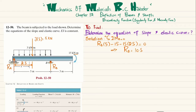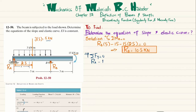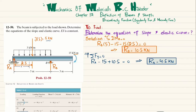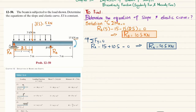Now with Rb known, we find Ra using sum of forces in the y-direction equals zero (upward positive): Ra − 15 + 10.5 = 0, so Ra = 4.5 kN. With both reactions known, we find the slope and deflection equations using EI·(d²v/dx²) = M, where the bending moment M is obtained using Macaulay's method.